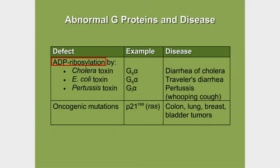And as a result, we get the traveler's diarrhea that goes on with E. coli toxin and the severe diarrhea that goes on with cholera toxin.